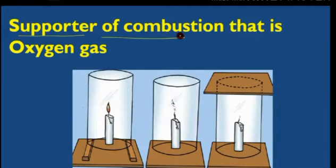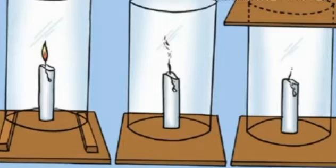In the previous part, we discussed whether a supporter of combustion is necessary for combustion. Let's take an activity. At first, you can see this picture that three candles are there. Then put a glass chimney over the candle.